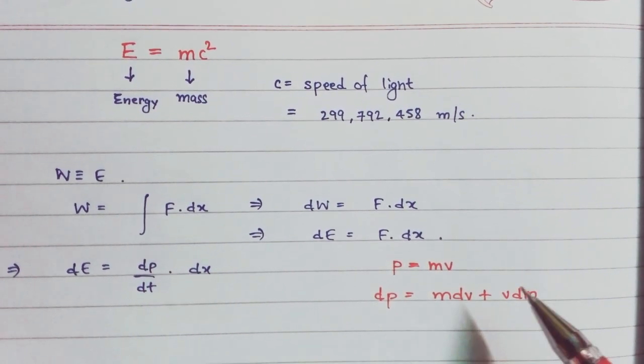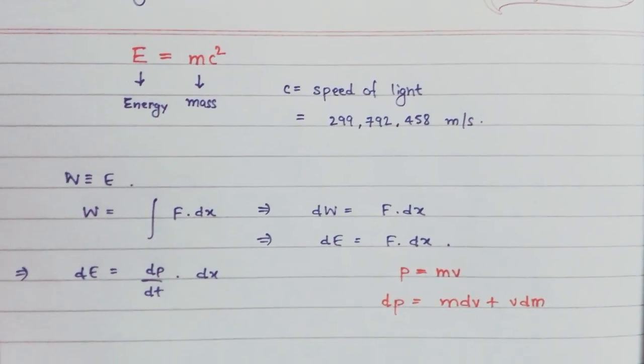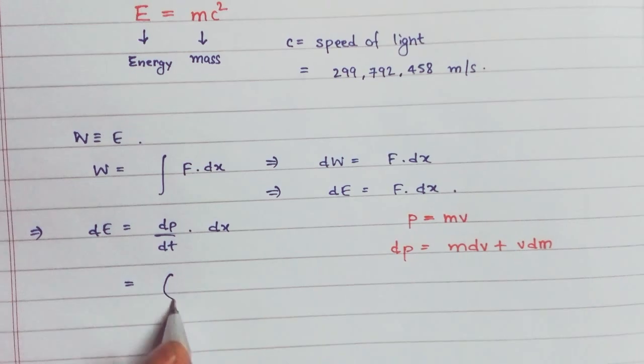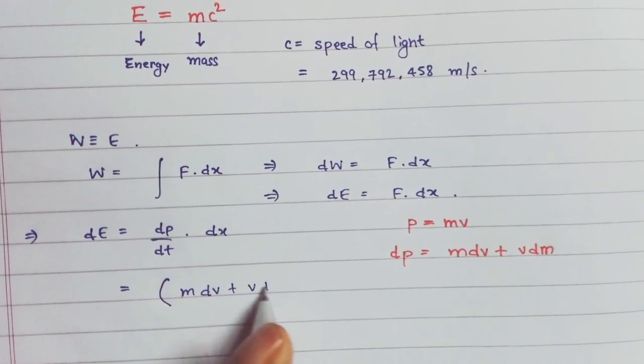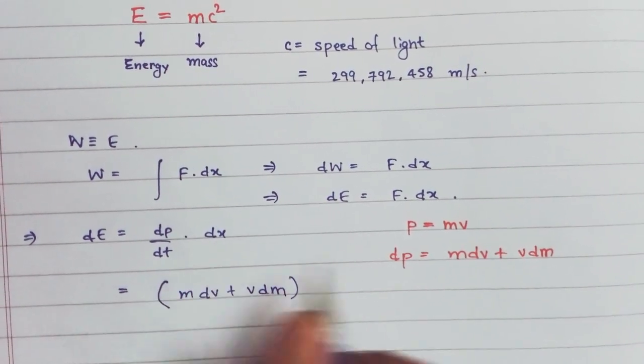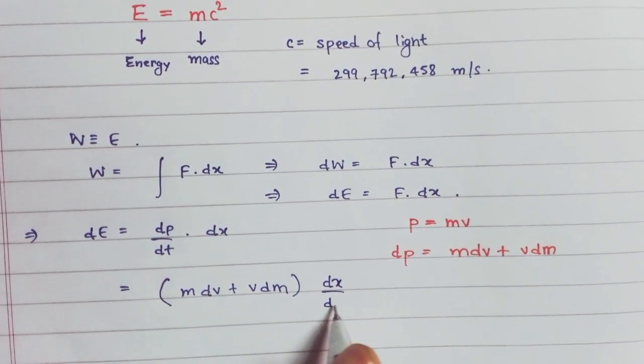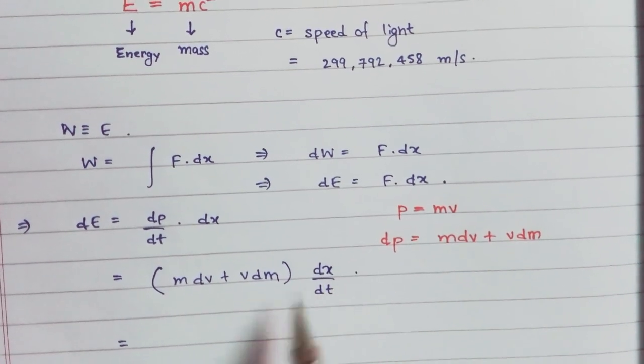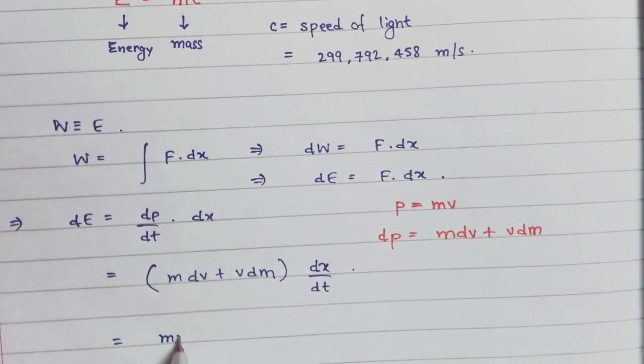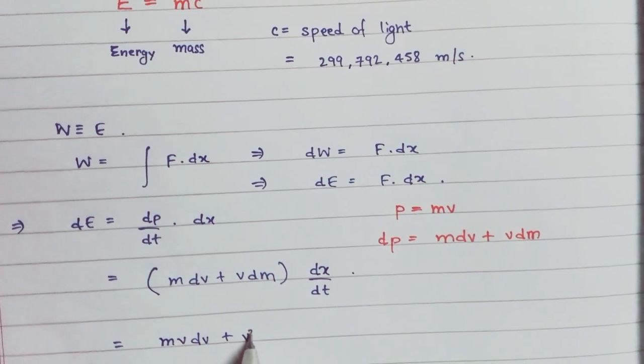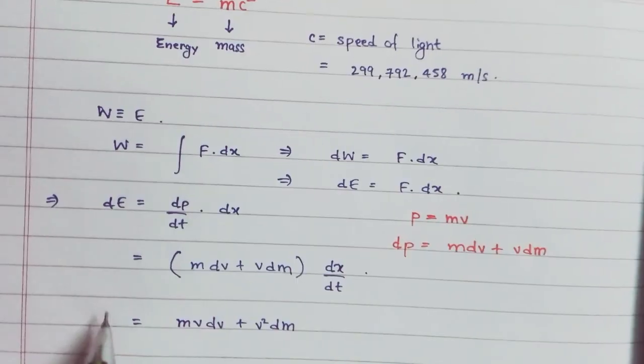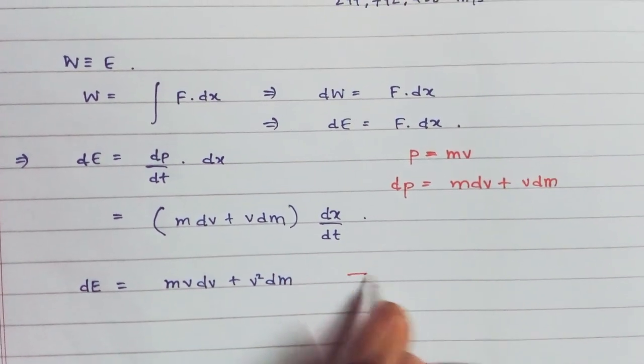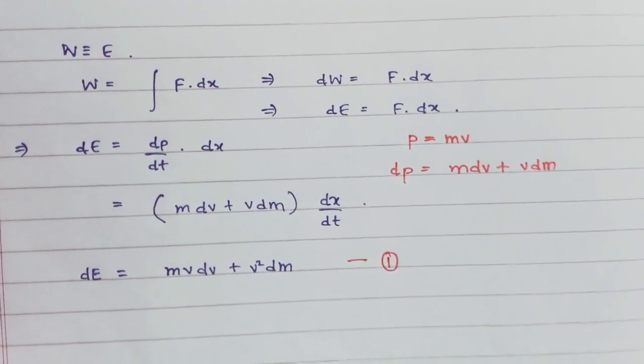We can substitute dP. We get mdv plus vdm, this is dP, times dx by dt. Now dx by dt is velocity V. If we multiply this, we get mvdv plus V squared dm. This is dE. Let's take this as equation one.